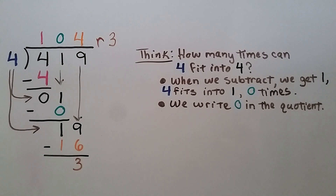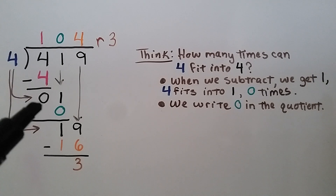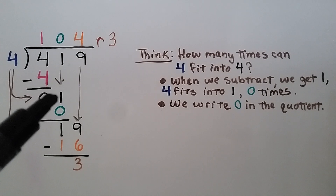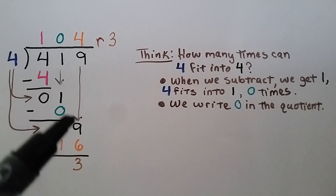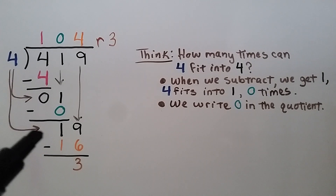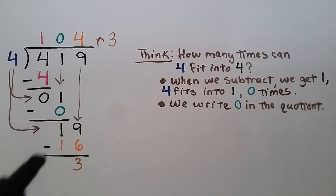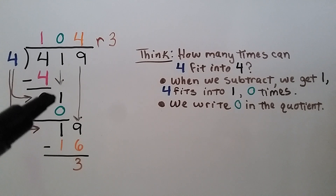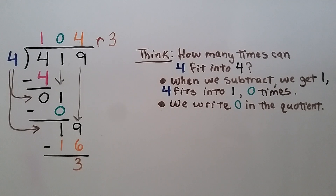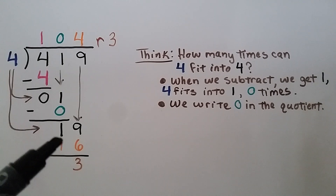This one may seem a little tricky. We have 419 divided by 4. How many times can 4 fit into 4? One time. So we write a 1 above there for our partial quotient. We do 4 times 1 is 4, subtract, and get 0. Now it's the 1's turn to come down. How many times can 4 fit into 1? It can't — it fits in 0 times. So we put a 0 up here, do 4 times 0 is 0, subtract again, and bring the 1 down. Now it's the 9's turn to come down. How many times can 4 fit into 19? 4 times 4 is 16. We subtract 16 and get a 3. If your divisor will not fit into the difference, it fits 0 times — that's the partial quotient — and we write it above the dividend in the correct place value and drop the next number down.